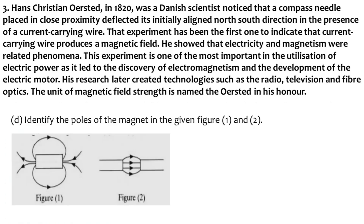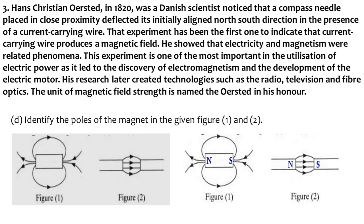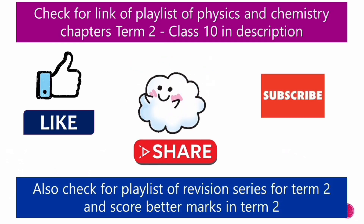Identify the poles of the magnet in figures 1 and 2. Magnetic field lines start from the north pole and end at the south pole outside a bar magnet. In figure 1, the field lines start from the left pole and move towards the right pole, so the north pole is on the left side and the south pole is on the right side. In figure 2, the field lines start from the first magnet and move towards the second magnet, so the first magnet has the north pole and the second magnet has the south pole.